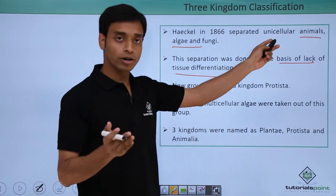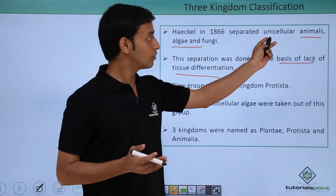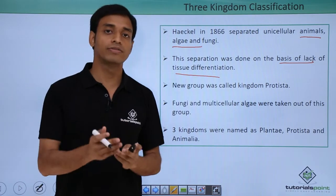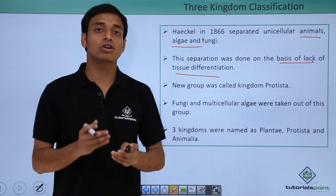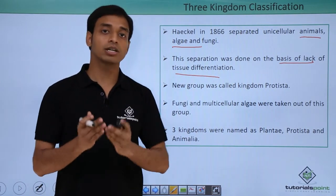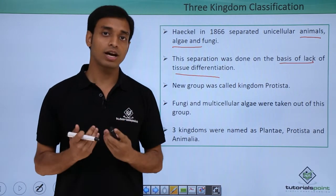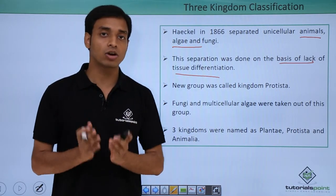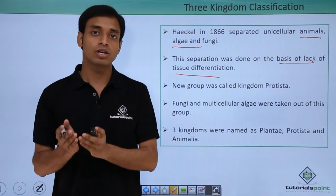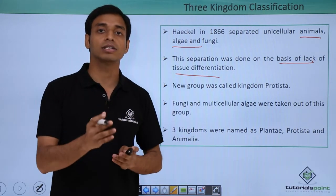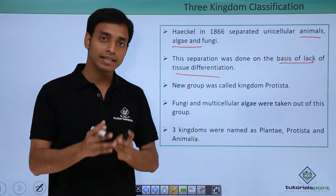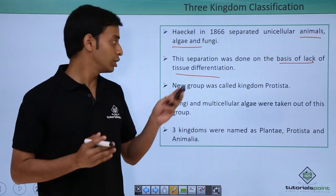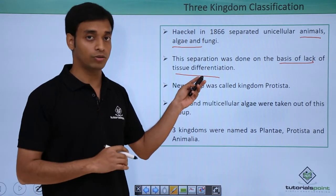In unicellular animals, algae, and fungi, the tissues are not differentiated much — they are not differentiated into organs, as compared to human beings and multicellular complex organisms. In complex organisms, tissues have been differentiated into organs, then into organ systems, and then the whole organism. So tissue differentiation is not present in these simpler groups.